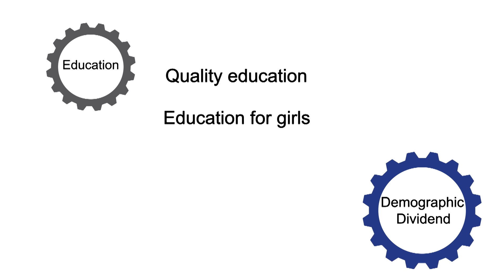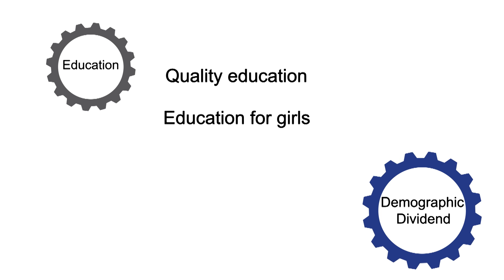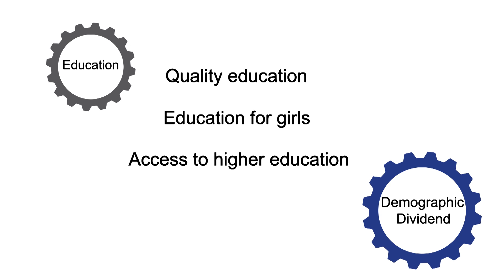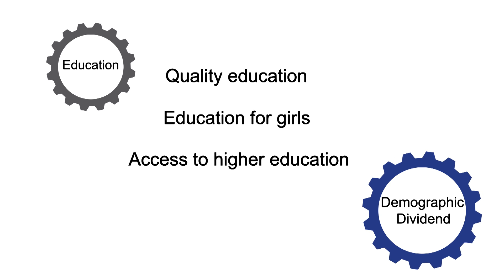Girls and boys with higher levels of education earn higher wages. Women who are educated can work outside the home. Education of girls contributes to older age at marriage, later age at childbearing, and healthier children. Also related to education is access to secondary and tertiary education. It's in high school and in university that people learn the analytic skills that will help them become more competitive in the labor force and take on more technical jobs.